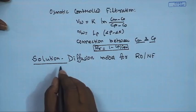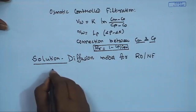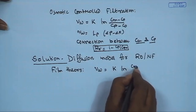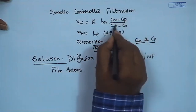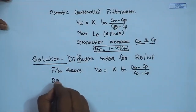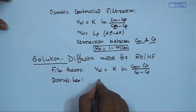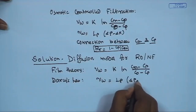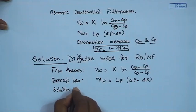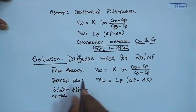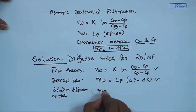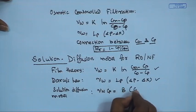The governing equations for the RO/NF solution diffusion model are: the film theory equation V_w equals k times ln[(C_m minus C_p)/(C_naught minus C_p)]; Darcy's law V_w equals L_p times (delta_p minus delta_pi) for solvent flux through the membrane; and the solution diffusion model for solute flux, V_w times C_p equals B times (C_m minus C_p). These give three equations in three unknowns: V_w, C_m, and C_p.